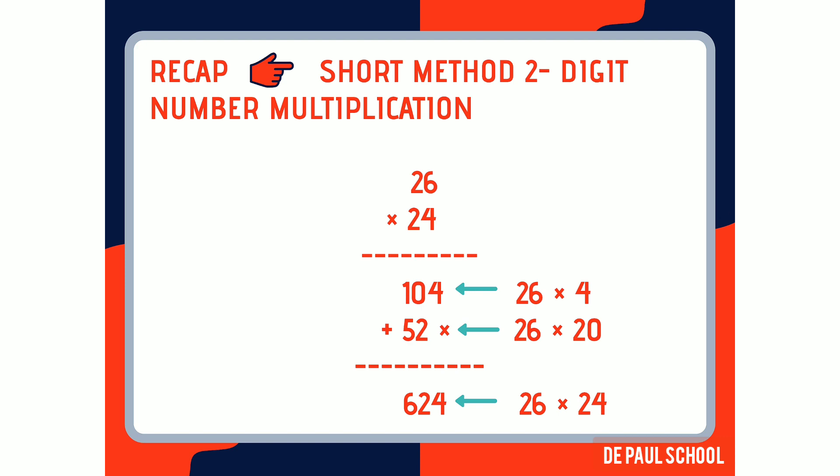Then 26 is multiplied by 20, giving an answer of 520. After this, you add the numbers from both rows to get the final answer. The final answer is 624. So when 26 is multiplied by 24, your answer is 624.